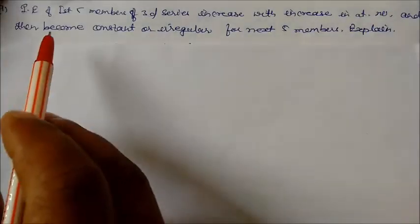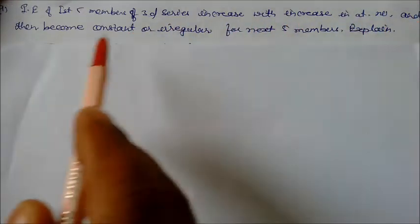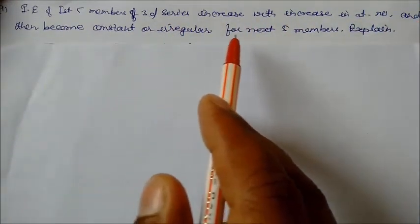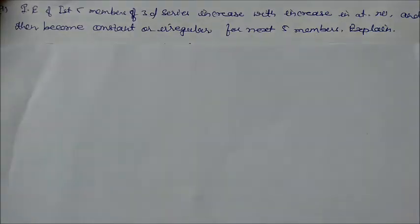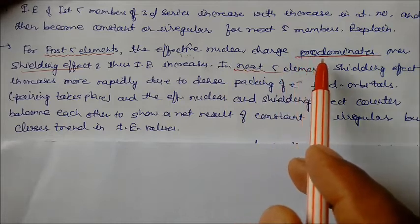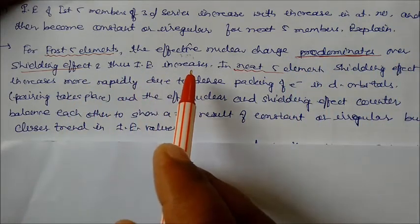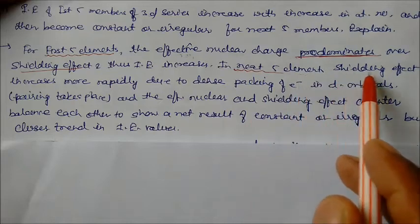Ionization energy of first five members of the 3d series increase with increase in atomic number and then become constant or irregular for next five members. Explain. For first five elements the effective nuclear charge predominates over the shielding effect and thus ionization energy increases.